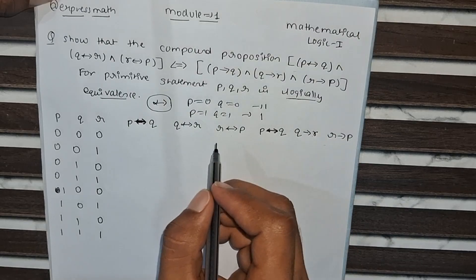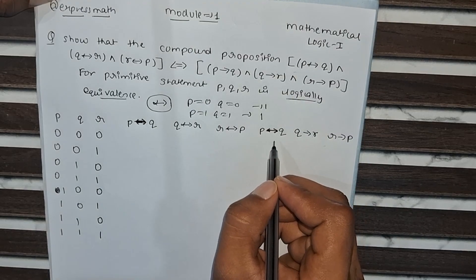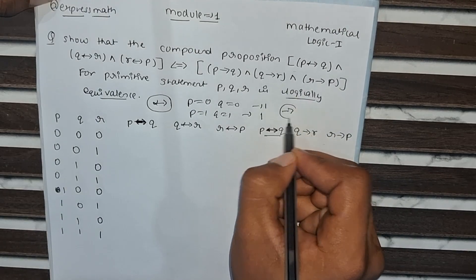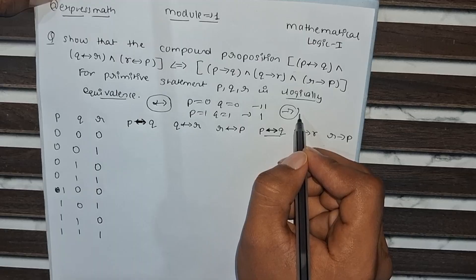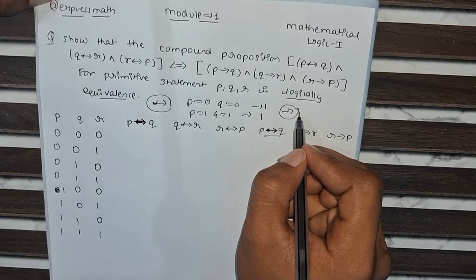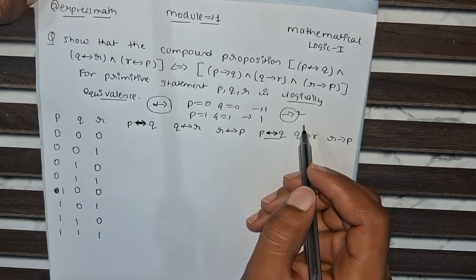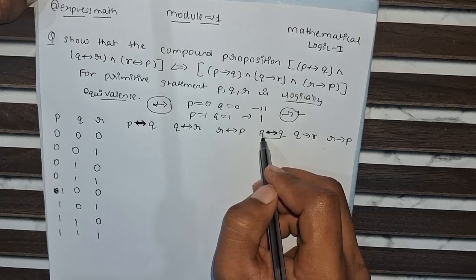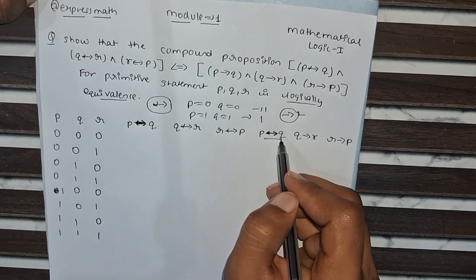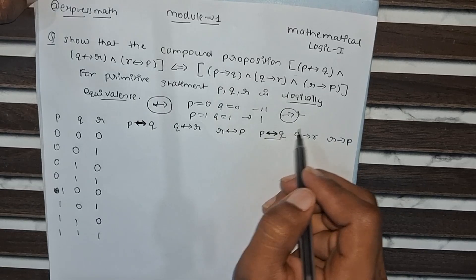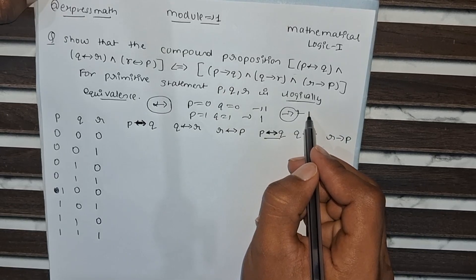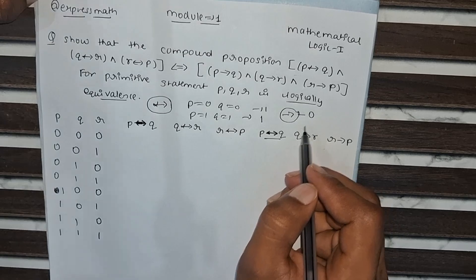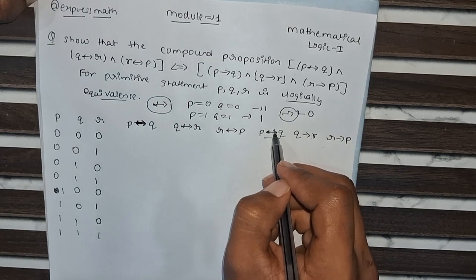Now this is the case for conditional. How can we obtain the value of conditional? In conditional, if the left side value is 1 and the right side value is 0, then it will be 0; otherwise the remaining cases will be true.